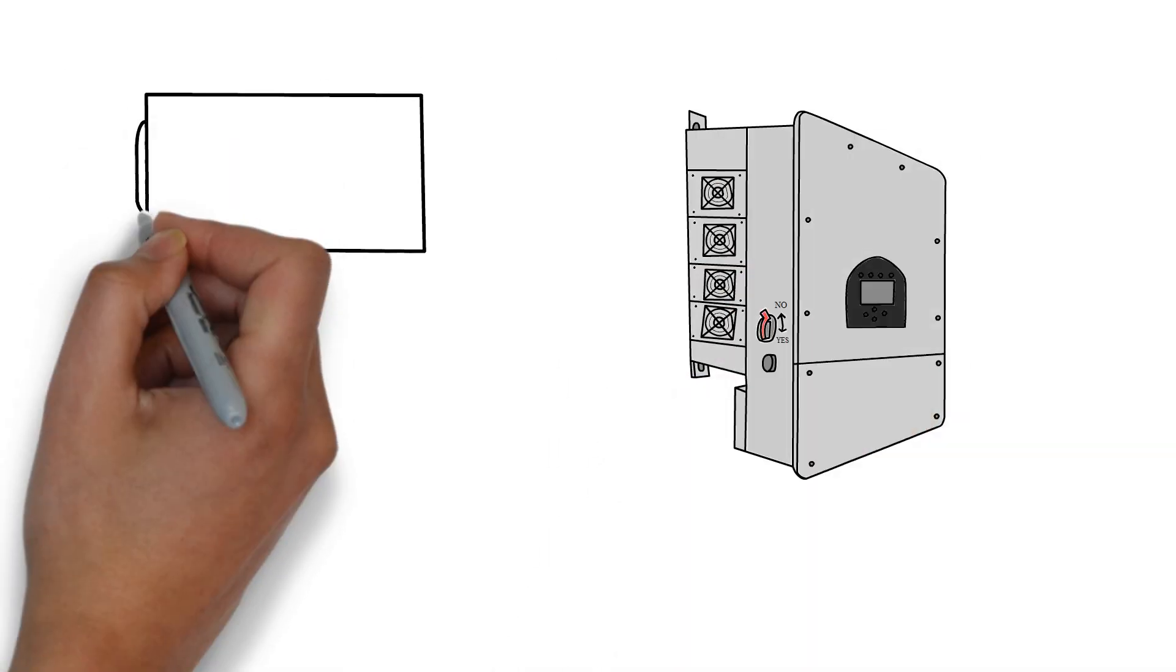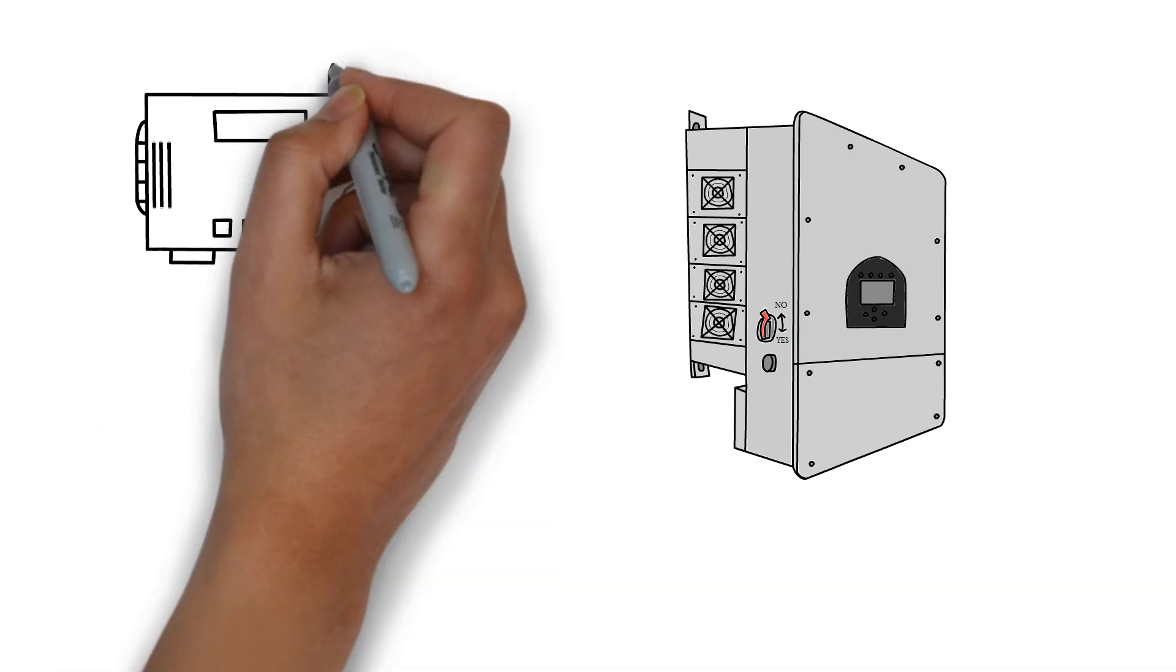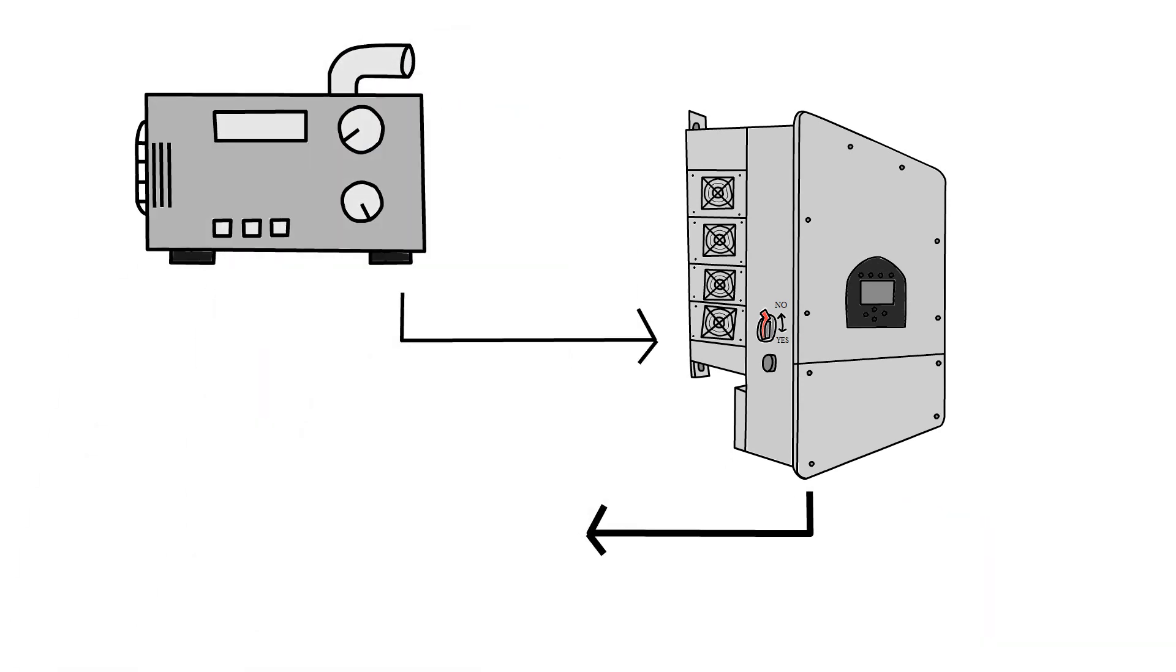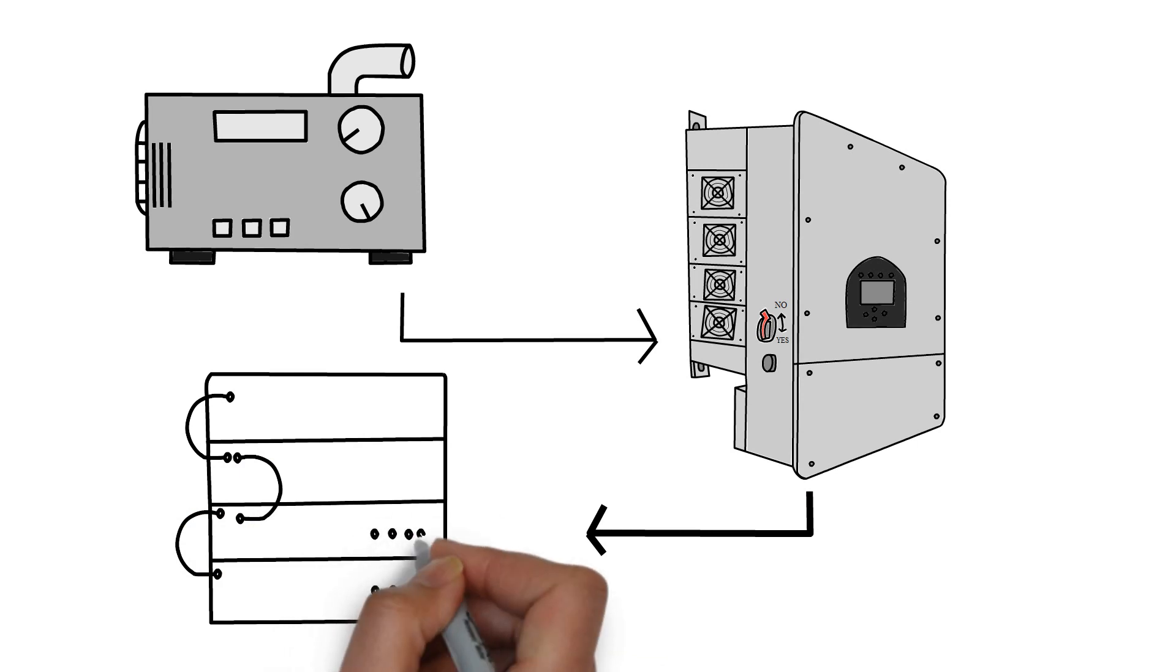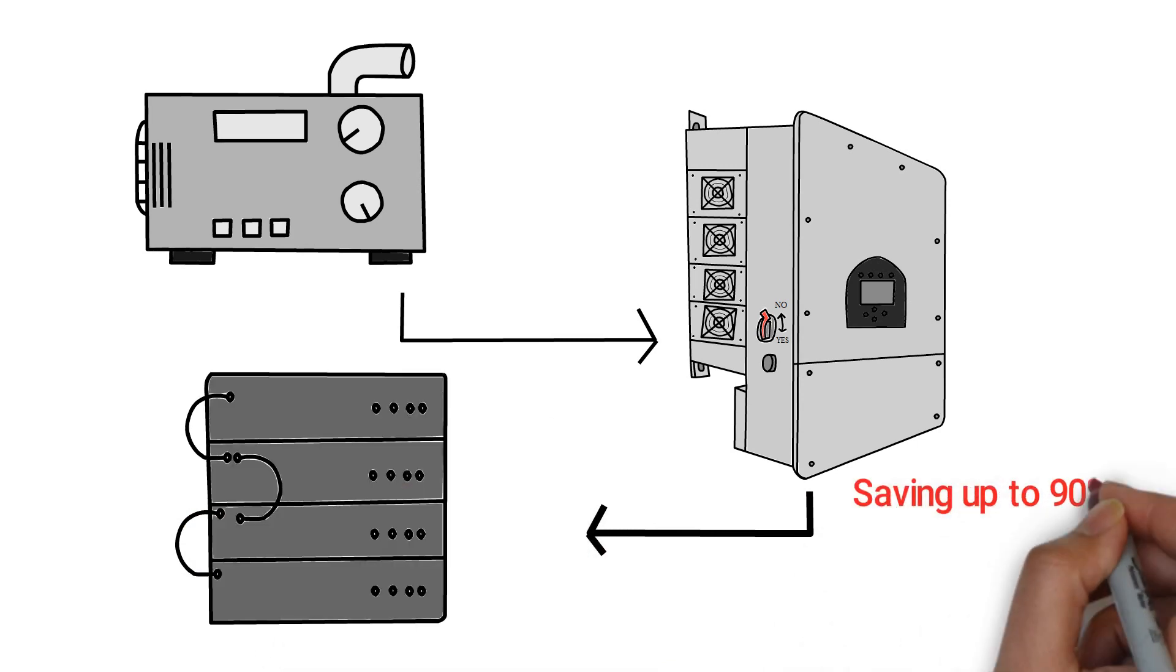The inverter can control a generator in a similar way to a hybrid car, in that the generator will only be used when the batteries are depleted to a certain level, thus saving up to 90% of diesel consumption.